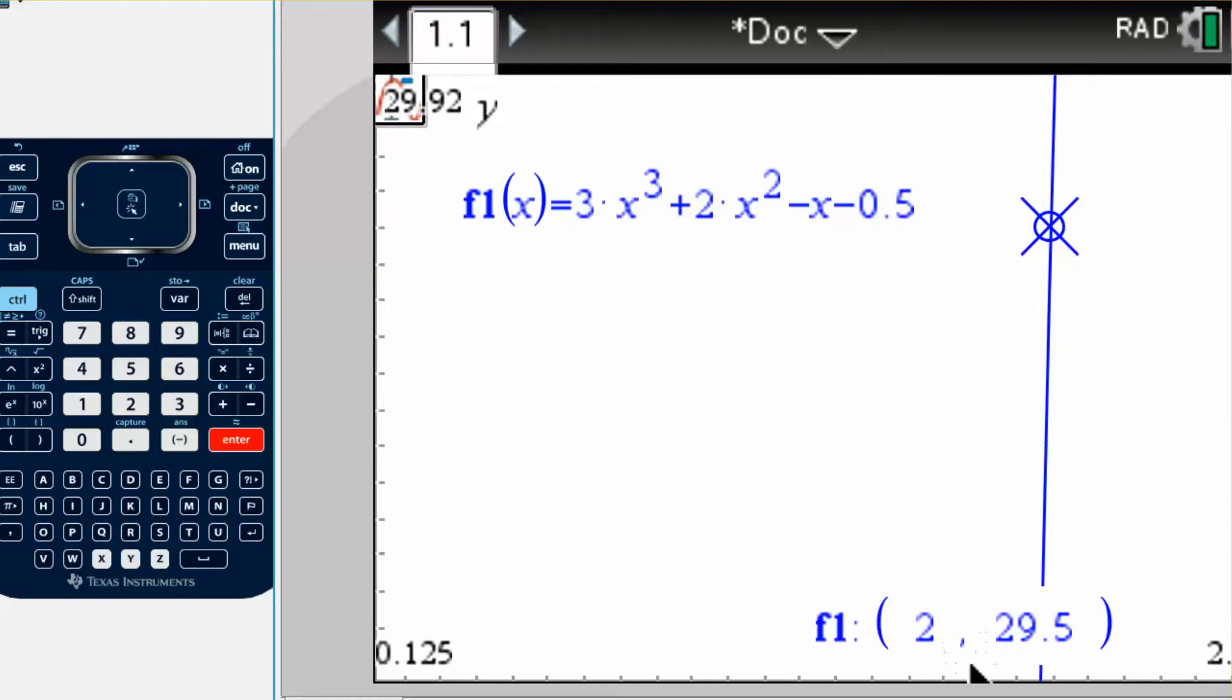Right here is showing you when x is equal to 2. Then push enter and it's going to show you up here. So when x is equal to 2, y is equal to 29.5. I hope that was helpful. I'll show you a few more things in the next lesson.